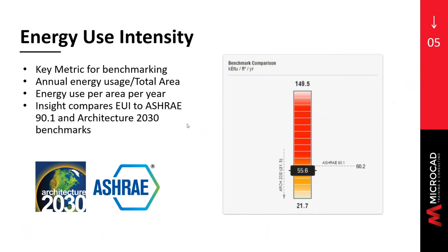The main feature you're going to see with Insight is a key metric called the EUI, or Energy Use Intensity. Factors such as lighting, HVAC system types, and plug loads all affect your EUI, which is the key metric for benchmarking your buildings. The EUI is calculated as the annual energy use divided by the total area of your building. Insight compares the EUI to either ASHRAE 90.1 or the Architecture 2030 benchmark, allowing you to get closer to the performance levels required for your project.